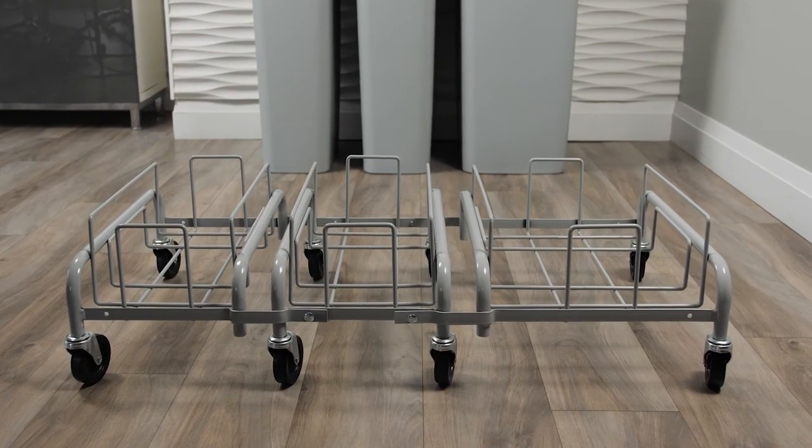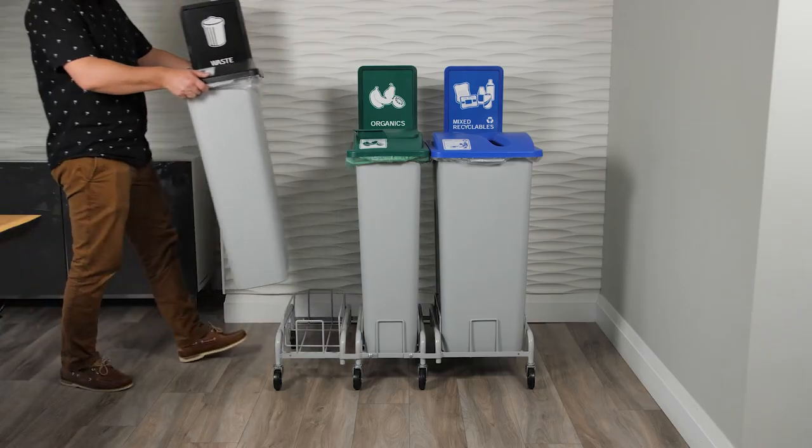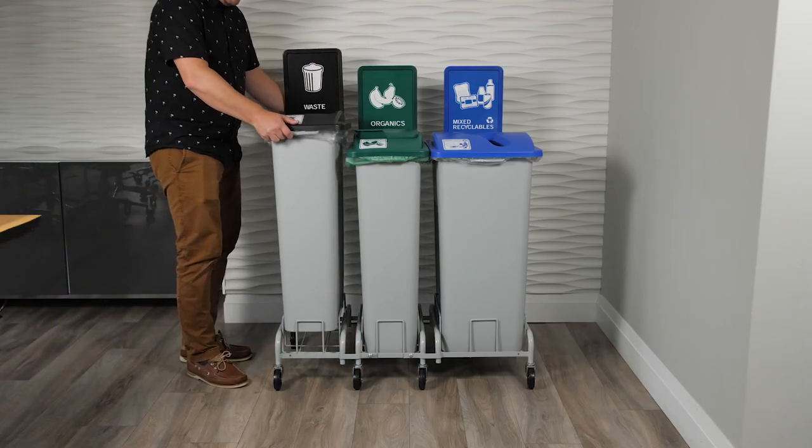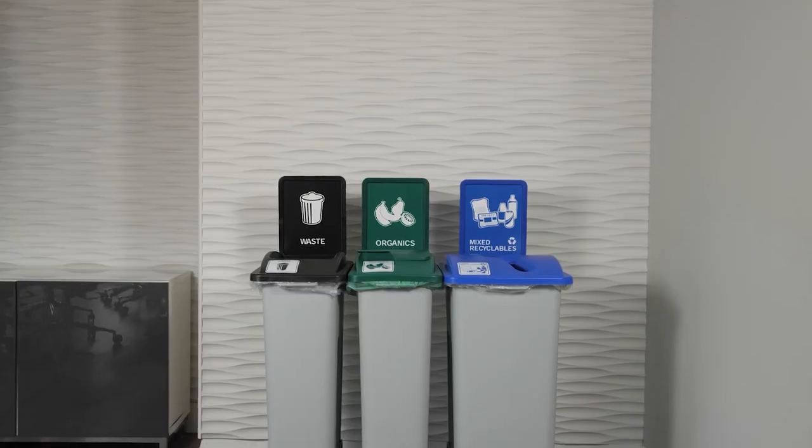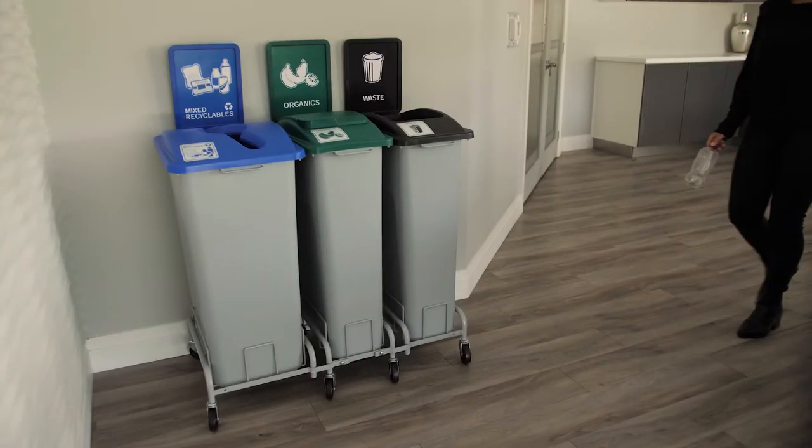Continue the same process for all expansions that you require, keeping the single dolly in the middle as the base. Place each assembled container into the dolly. Your Waste Watcher station is now complete and ready to help you achieve your waste diversion goals.